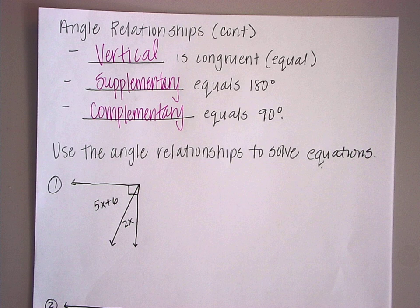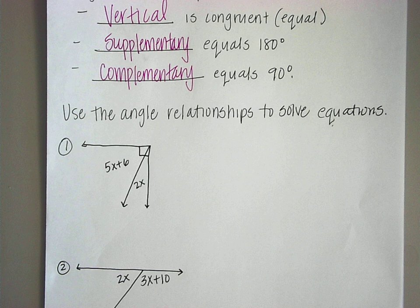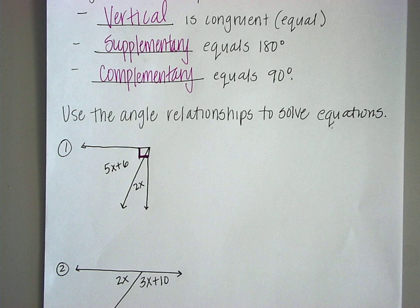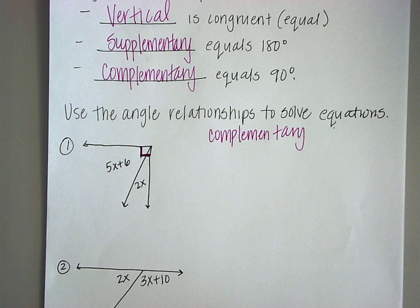We're going to use those three relationships to solve some equations. Look at number one. The first step is to label what kind of relationship it is. It is complementary. This box tells us it's a right angle. Right angles equal 90 degrees, so we know it is complementary because it equals 90 degrees. Those two angles have to equal 90.